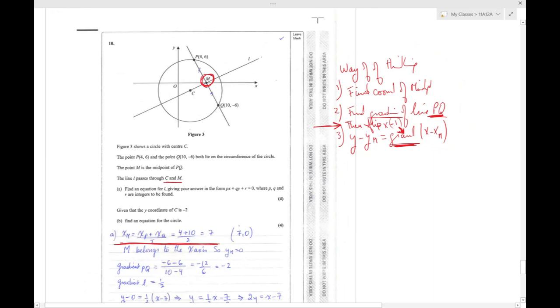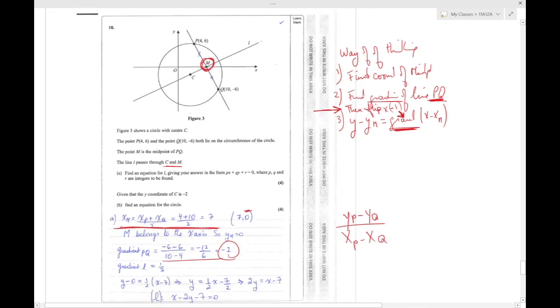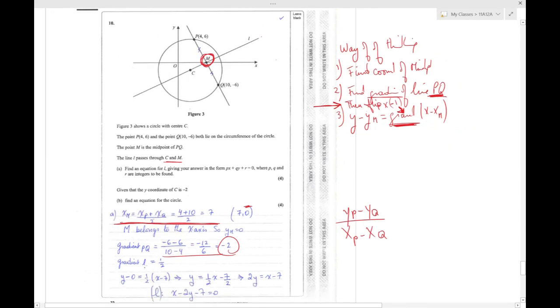Gradient of PQ is Y of P minus Y of Q over X of P minus X of Q, so this is what I did here and it's minus 2. The gradient for L - you flip and you multiply by minus, so it becomes half.